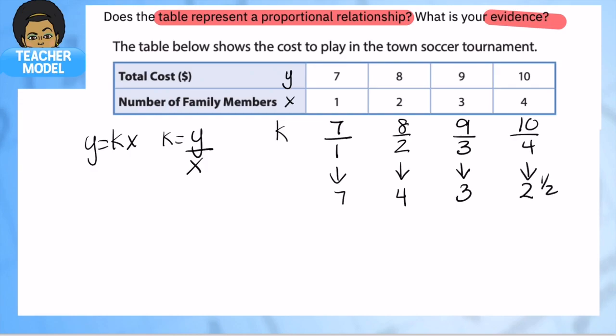So looking at this, I don't have a consistent pattern. Every single time I have a new family member it's not the same cost. So no, this does not represent a proportional relationship because each time I divided I had a different ratio. I got a different number in the end. This does not represent the same cost.